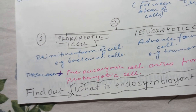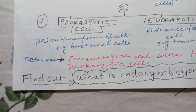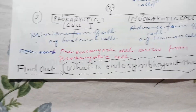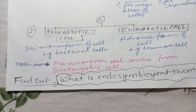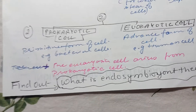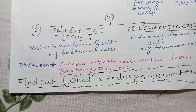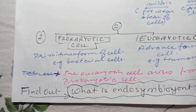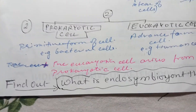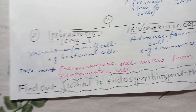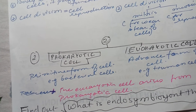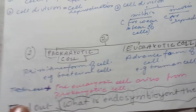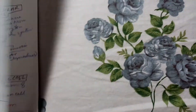There is a theory that eukaryotic cells arose from prokaryotic cells. You have to find out about this — it is called the endosymbiotic theory, which explains how eukaryotic cells evolved from prokaryotic cells through an evolution process. Eukaryotic cells represent the most advanced form of cell today.